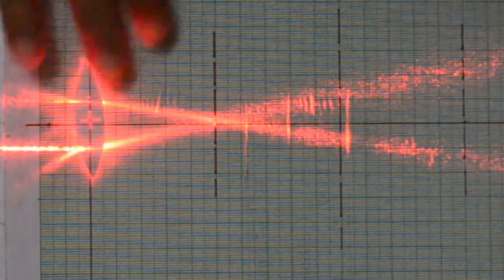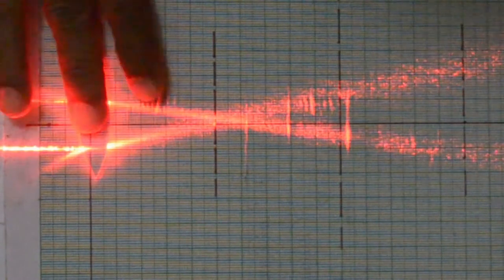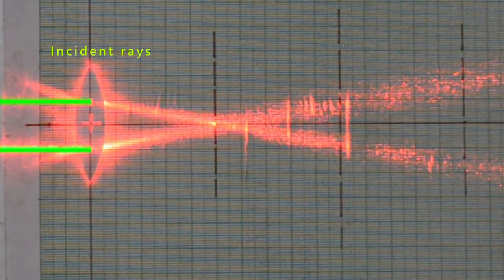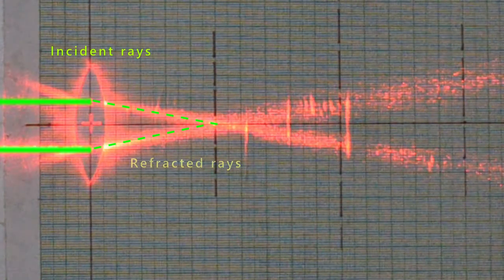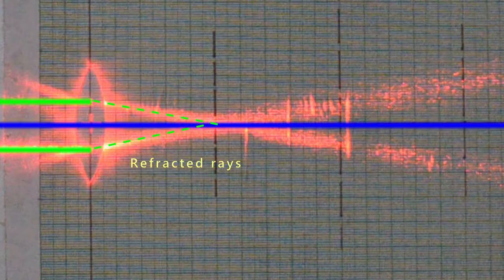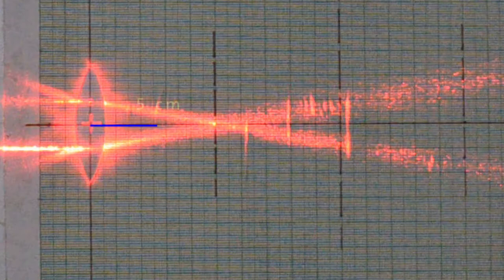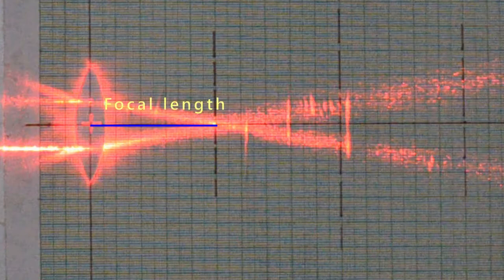Rays coming from a laser onto a convex lens are called incident rays. These are refracted rays. This is the principal axis. Placing a convex lens converges incoming parallel rays at a distance of 5 cm. This is also called focal length of the lens. Focal length will change with change in medium as well, like water instead of air.